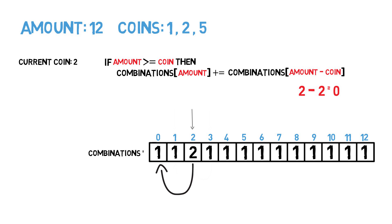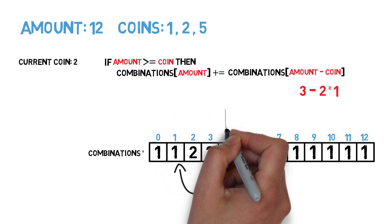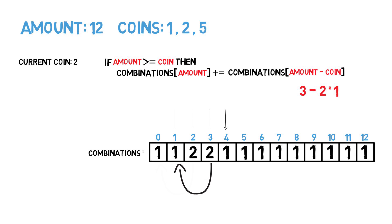We look at amount 0 and add its value of 1 to the current value 1, giving amount 2 two combinations. For amount 3: 3 minus 2 equals 1, we take the value from amount 1 and add it to amount 3, giving two combinations. For amount 4: 4 minus 2 equals 2, we check amount 2 and add its 2 combinations, giving amount 4 three total combinations. Think of it this way: there are two ways to create amount 2 already found — we're just adding another coin 2 to both those combinations to create 4, plus the 1+1+1+1 from the first iteration, giving 3 total. At the end of two full iterations there are seven total combinations for amount 12.